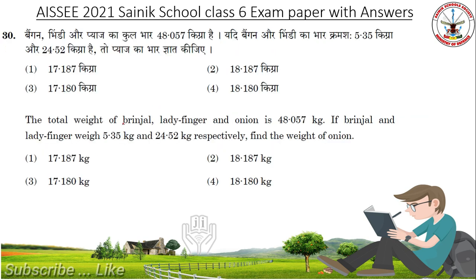The total weight of Brinjal, Ladyfinger and Onion is 48.057 kilograms. If Brinjal and Ladyfinger weigh 5.35 kilograms and 24.52 kilograms respectively, find the weight of Onion. Pause the video and do the calculation. Answer is Option 2: 18.187 kilograms.